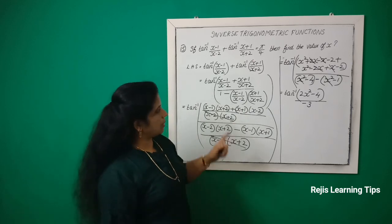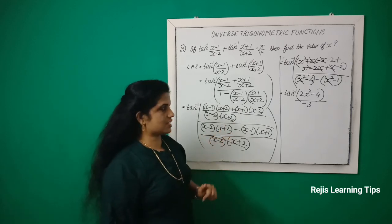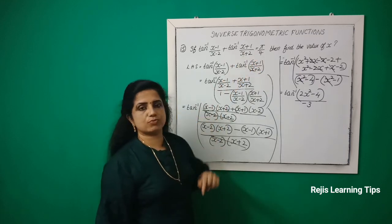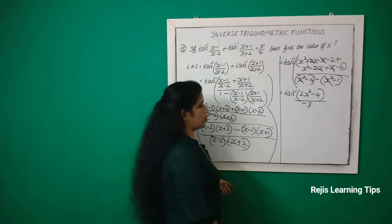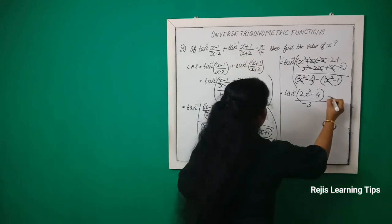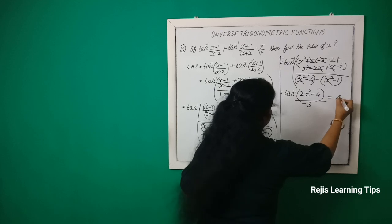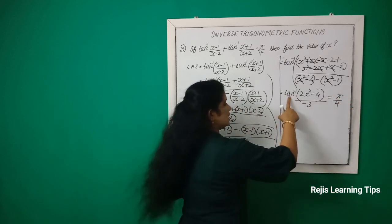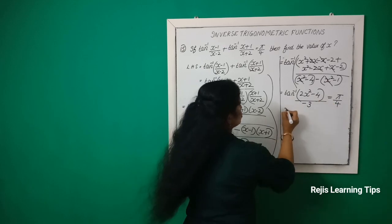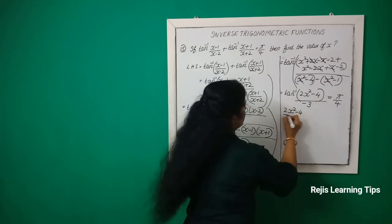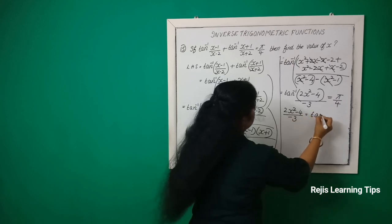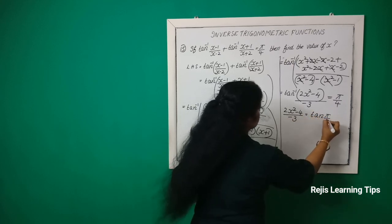So LHS = tan⁻¹((2x²−4)/(−3)) and RHS = π/4. Setting them equal: tan⁻¹((2x²−4)/(−3)) = π/4. Therefore (2x²−4)/(−3) = tan(π/4).